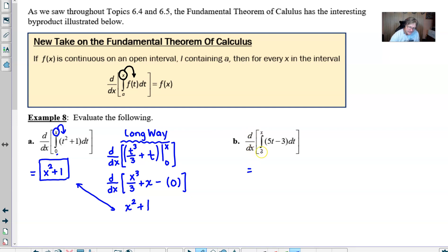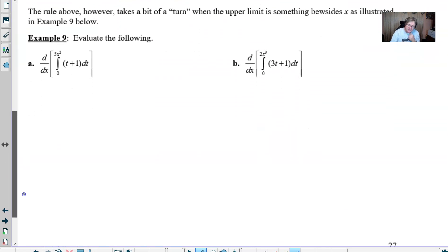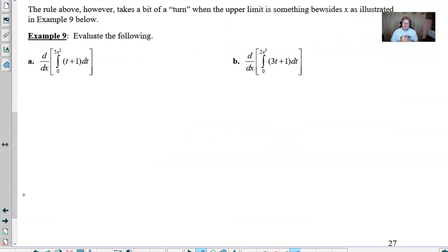Same thing's going to apply for b here. Derivative with respect to x of the integral from 2 to x of 5t minus 3 with respect to t. Replace the t with x. Game over. Not bad. Now, if we take a slightly different turn here.